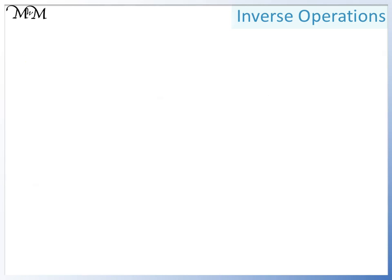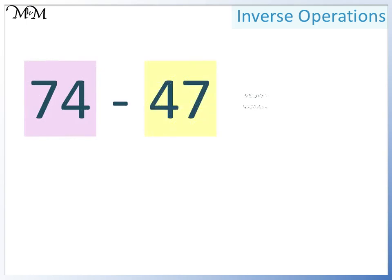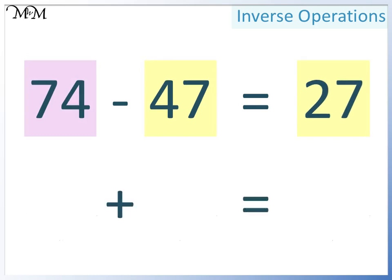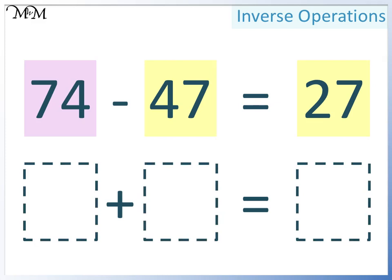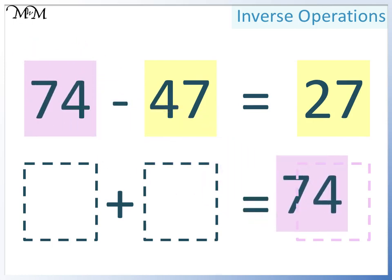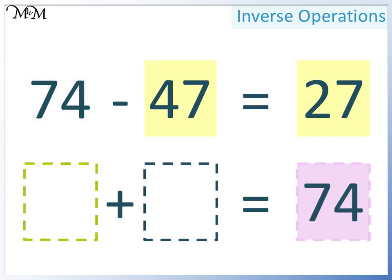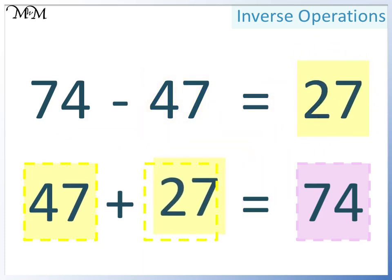Here's one more example. 74 take away 47 equals 27. A larger number take away a smaller number equals another smaller number. We want to write this as two addition calculations. We don't need to worry about calculating anything as we've been given the numbers involved. In an addition, two smaller numbers add together to make a larger number. The largest number in the subtraction is 74, so 74 must go here. In this space we can have either of the two smaller numbers; this time we'll choose 47, so in this space we must have 27. 47 plus 27 equals 74.